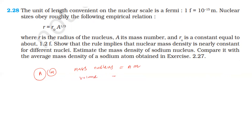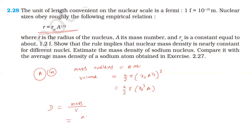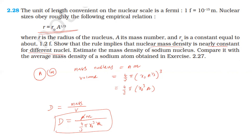The volume of the nucleus is (4/3) pi R cubed, where R equals R0 times A power (1/3). So volume equals (4/3) pi times R0 cubed times A. The density of the nucleus equals mass divided by volume, which is A times m divided by (4/3) pi R0 cubed times A. The factor A cancels in numerator and denominator, showing the density is independent of mass number — hence nearly constant for different nuclei.